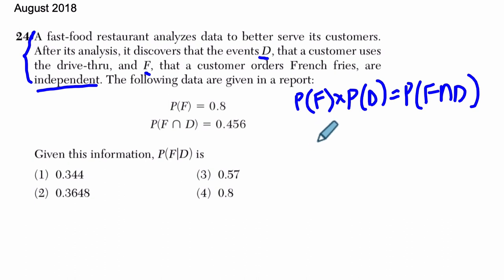We also know if these are independent events, two other things must be true. The probability of F given D equals the probability of F. In other words, whether or not they use the drive-thru doesn't impact the likelihood that they will order French fries. They're independent of each other, and that reads as F given D. So F given D and F is the same, and also the reverse.